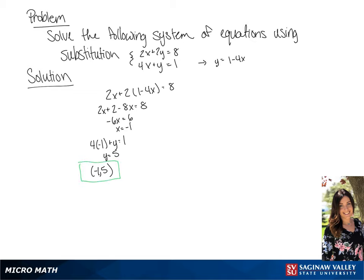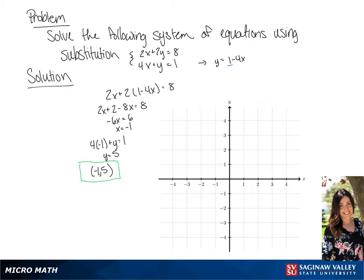Now we're going to graph these two equations. We're going to graph the second equation first. We see that it has a y-intercept of 1 and a slope of negative 4. So we're going to graph that line.